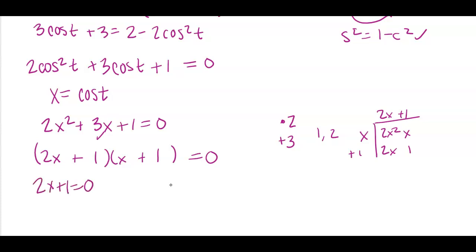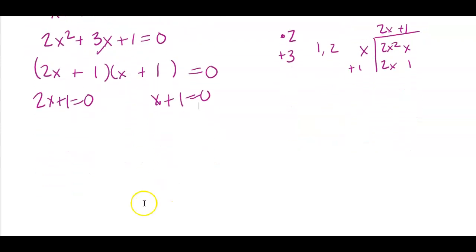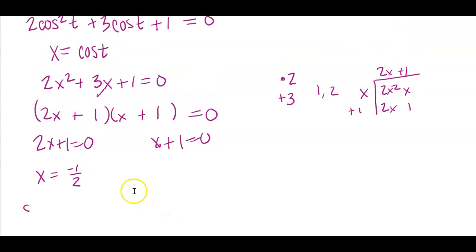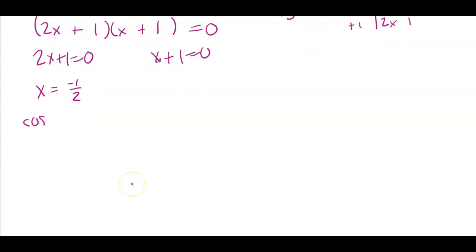Alright, so 2x plus 1 equals 0 and x plus 1 equals 0. So x is equal to negative 1 half. Remember that's cosine. And x equals negative 1. So I also need to figure out where cosine t is equal to negative 1.